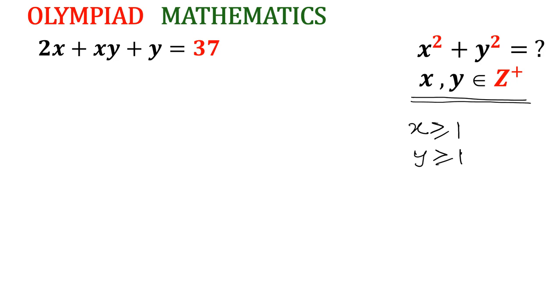Now let us take this equation, the original one: 2x plus xy plus y equal to 37. We can see that x is common to the first two terms.